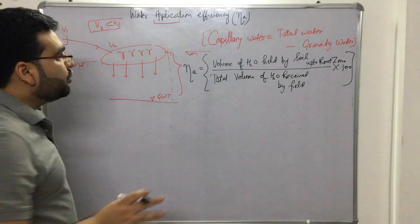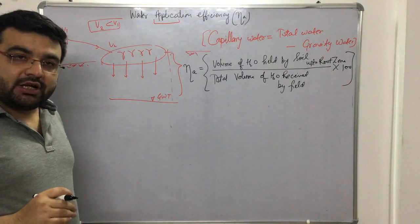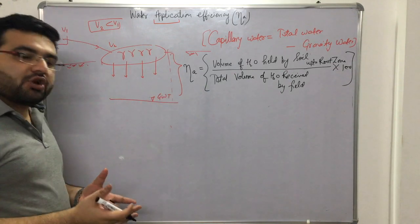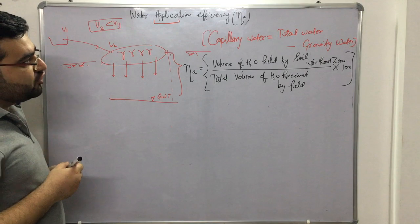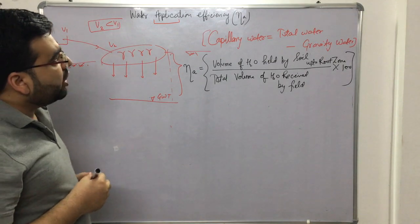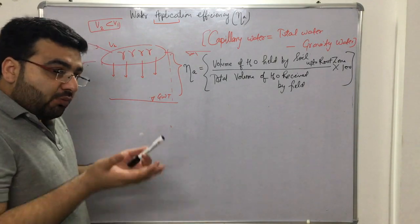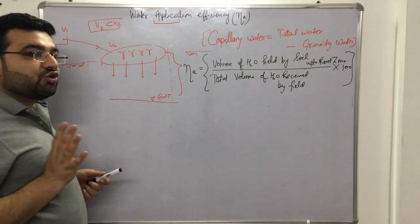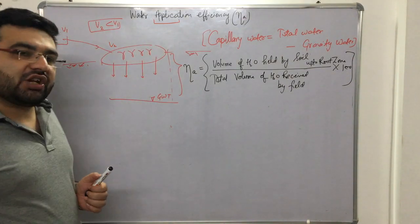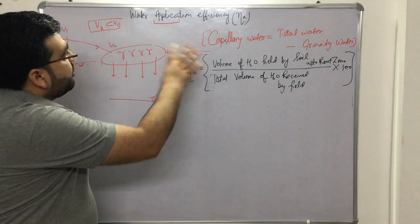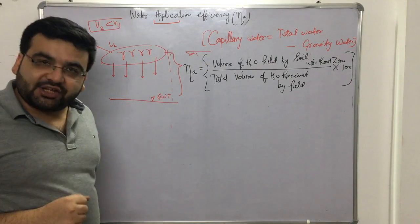So water application efficiency is the volume held by the root zone divided by the initial water coming to the field. It measures how much applied water is actually retained by the root zone. A numerical problem based on this concept will be solved in the next lecture.